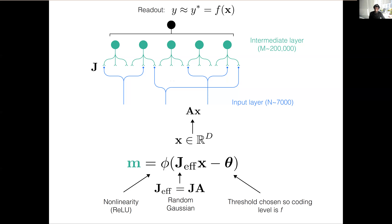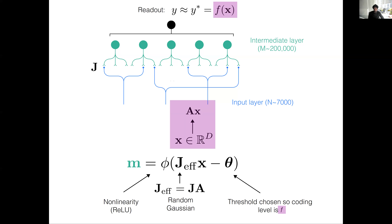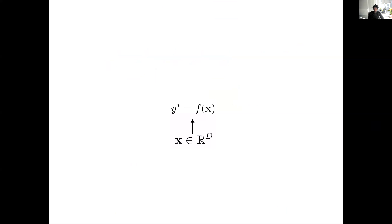These results required a strong assumption: the system's job is to take random inputs and map them onto random zero-or-one responses in the Purkinje cell. What I'm going to talk about today is extending that to more realistic scenarios. There are two things I'll focus on: extending the model beyond random inputs and outputs—motivated by the idea that many tasks, particularly sensory-motor tasks, involve inputs lying in a low-dimensional neural manifold—and also questioning the role of sparsity in the granule cell representation, motivated by recent studies suggesting granule cells may not be as sparse as previously thought.